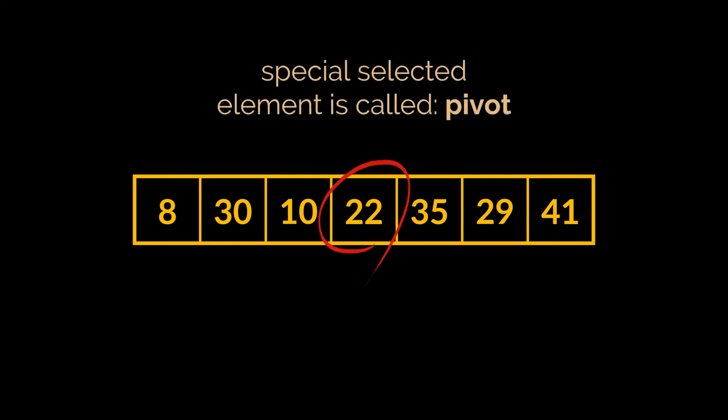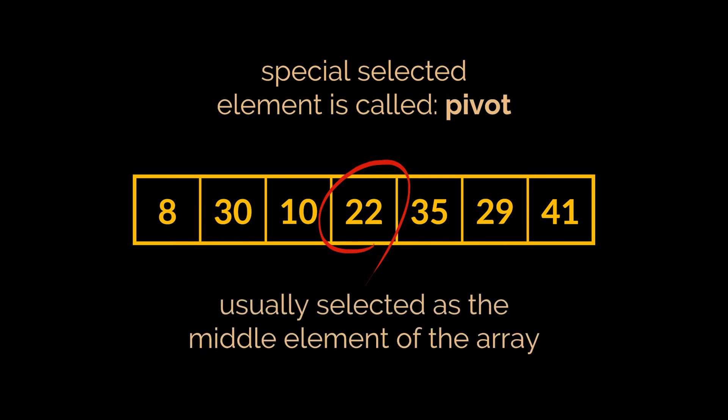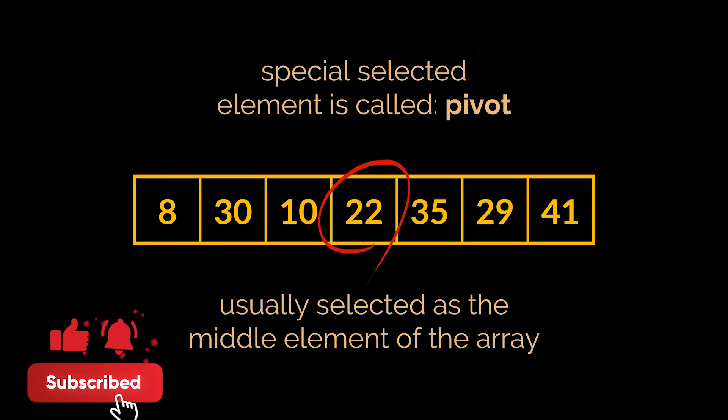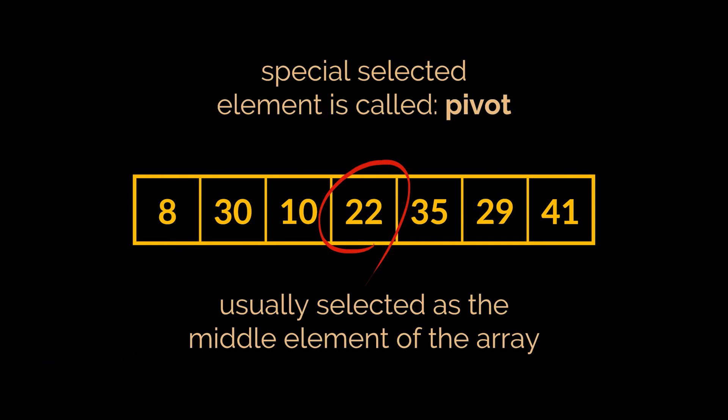To make things clearer, let's take this array of integers as an example and try to sort it using the quick sort algorithm. The array consists of seven elements. The first step is to select our special element — the one which the categorizing will be based upon — and this element in quick sort language is called the pivot. The pivot is usually selected to be the middle or center of the array. In this video I won't dive into why we select the pivot to be the center element, as I want to focus on the quick sort algorithm itself.